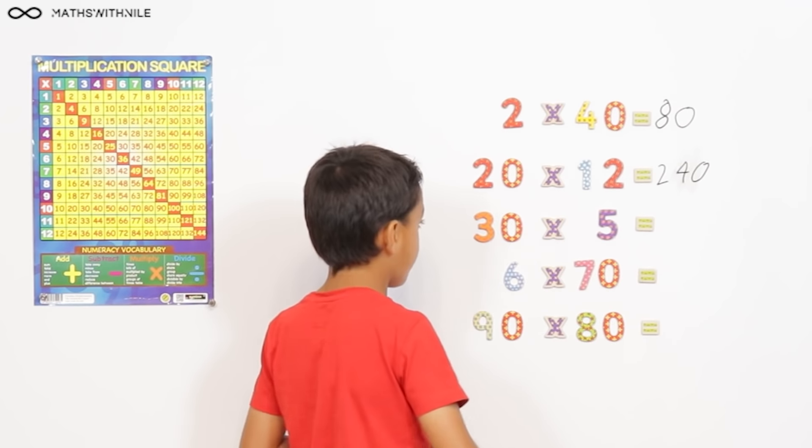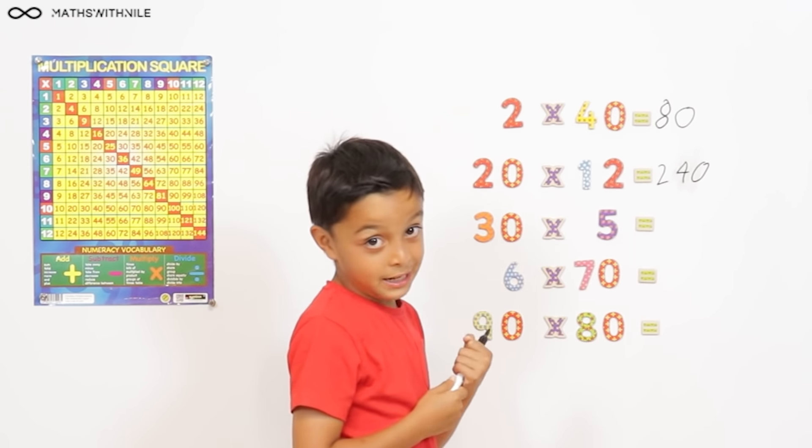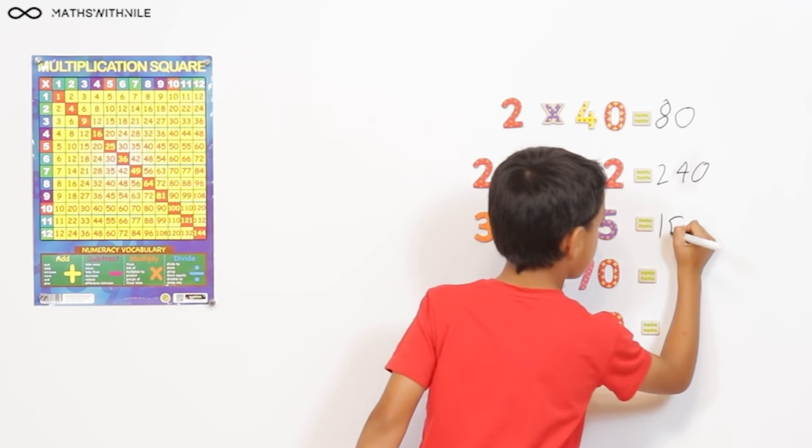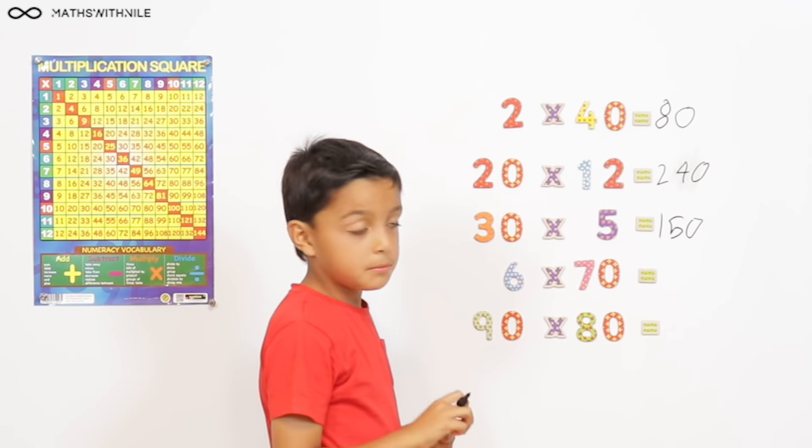And then 30 times 5. 3 times 5 equals 15, and that times by 0. So, 150. Very good, Niall.